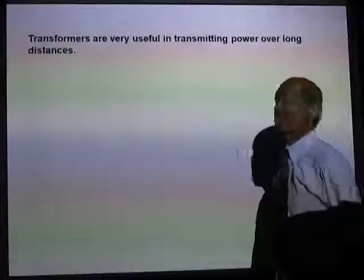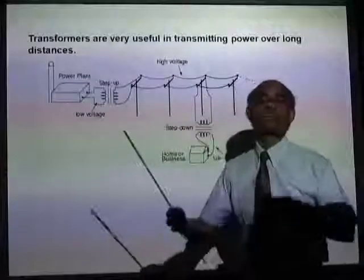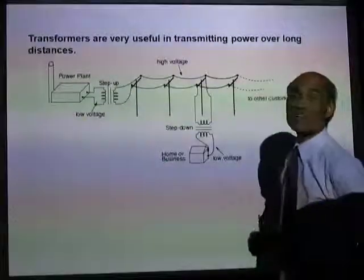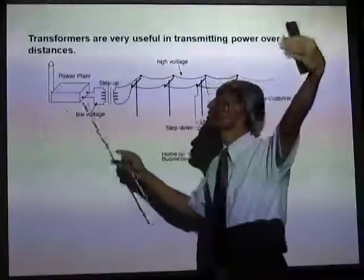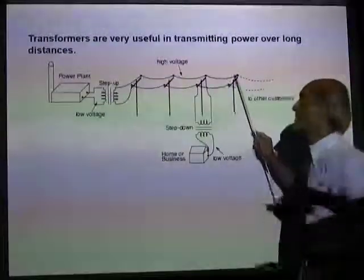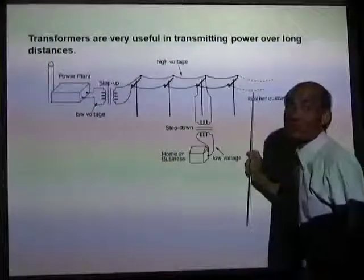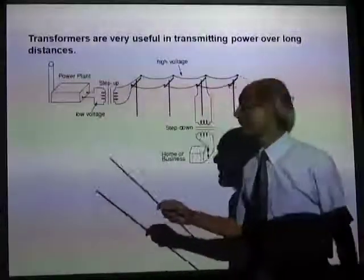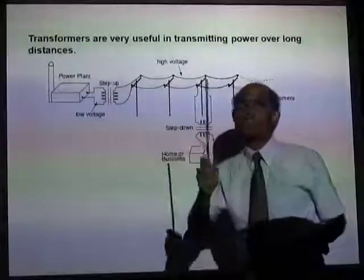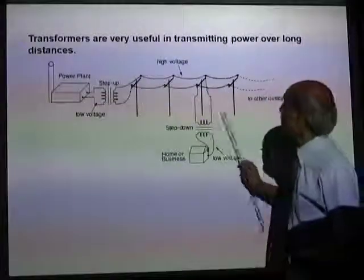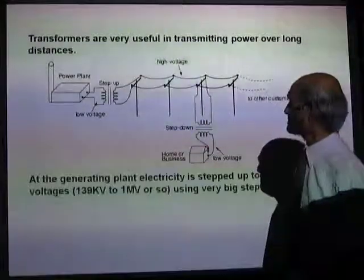Transformers are very useful in transmitting power over distances. In the power plant, electricity is generated at about 15,000 to 20,000 volts. It is then stepped up to about 400,000 volts — the high tension voltage. It then comes to the distribution network where a step-down transformer steps it down to about 4,000 volts, which is the line that comes to your house.